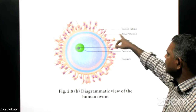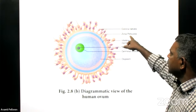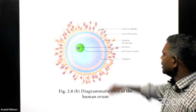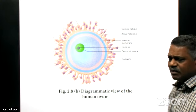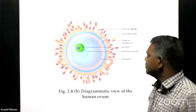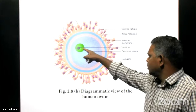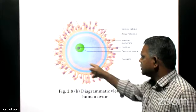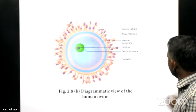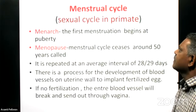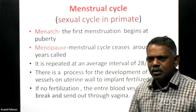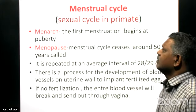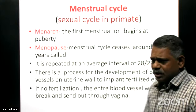The mature egg structure includes corona radiata, zona pellucida, and a vitelline membrane important for avoiding polyspermy. Inside is the nucleus and ooplasm - the cytoplasm of the egg cell. Now we come to another important topic: the menstrual cycle in females.